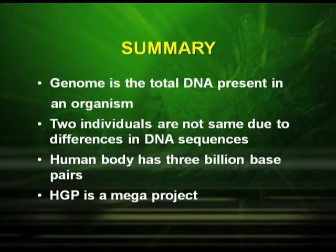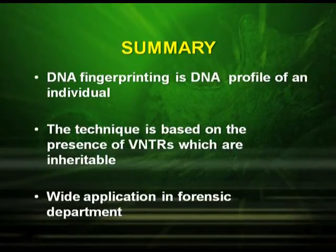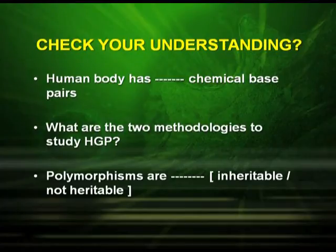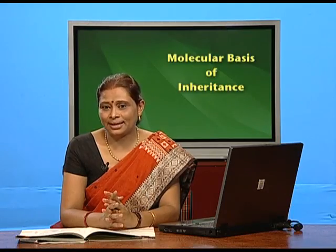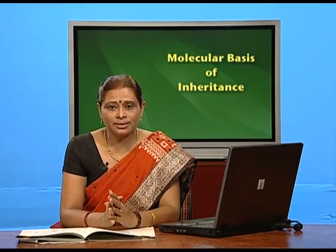To summarize: a genome is the total DNA present in an organism. Two individuals are not the same due to differences in DNA sequences. The human body has three billion base pairs. HGP is a mega project. DNA fingerprinting is the DNA profile of an individual, based on the presence of VNTRs which are inheritable, with wide application in forensic departments. Check your understanding: How many chemical base pairs does the human body have? What are the two methodologies to study HGP? Are polymorphisms inheritable or not? What is repetitive DNA also called? We have finished the molecular basis of inheritance. In the next discussion, we will cover the chapter on evolution. Thank you.